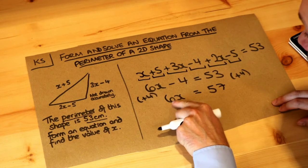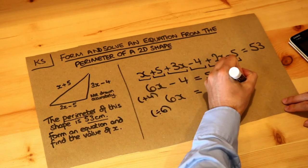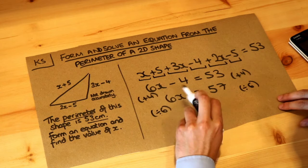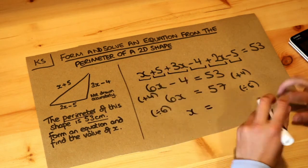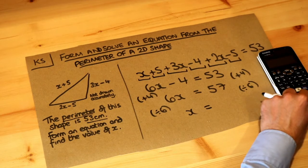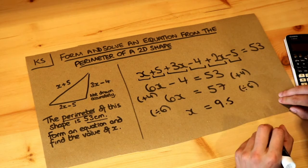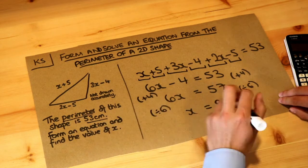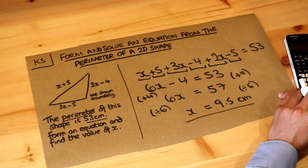And then we want to undo the times by 6, so we divide both sides by 6 to get rid of that times by 6. So that gets rid of the 6 on the left. And then we're going to do 57 divided by 6, and that gives us 9.5. And this is in centimetres, so that answer is in centimetres. And that's the final answer.